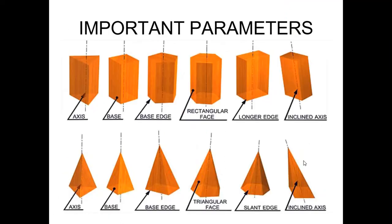Now let's look at important parameters you should know when solving problems. For prisms, the axis runs from the center of the bottom face to the center of the top face. These are the base edges and top face edges, and all lateral faces of a prism — whether triangular, square, pentagonal, or hexagonal — are rectangular faces. A rectangular prism can also have an inclined axis.